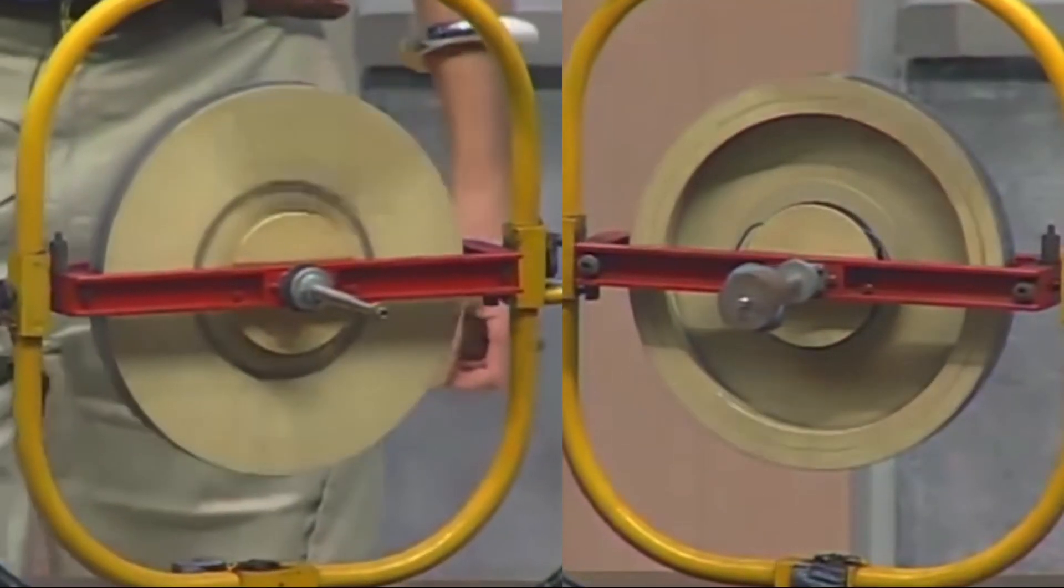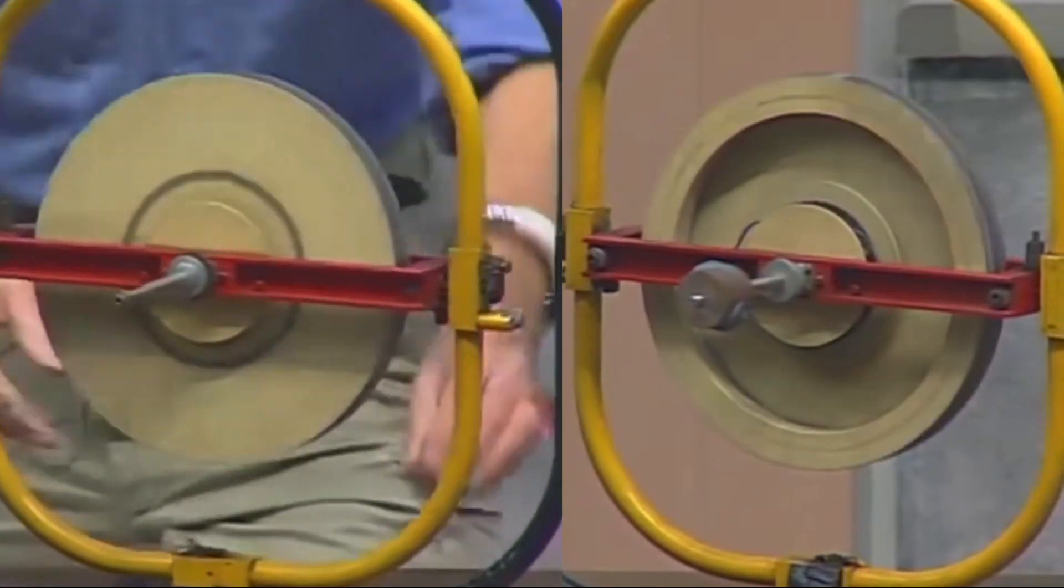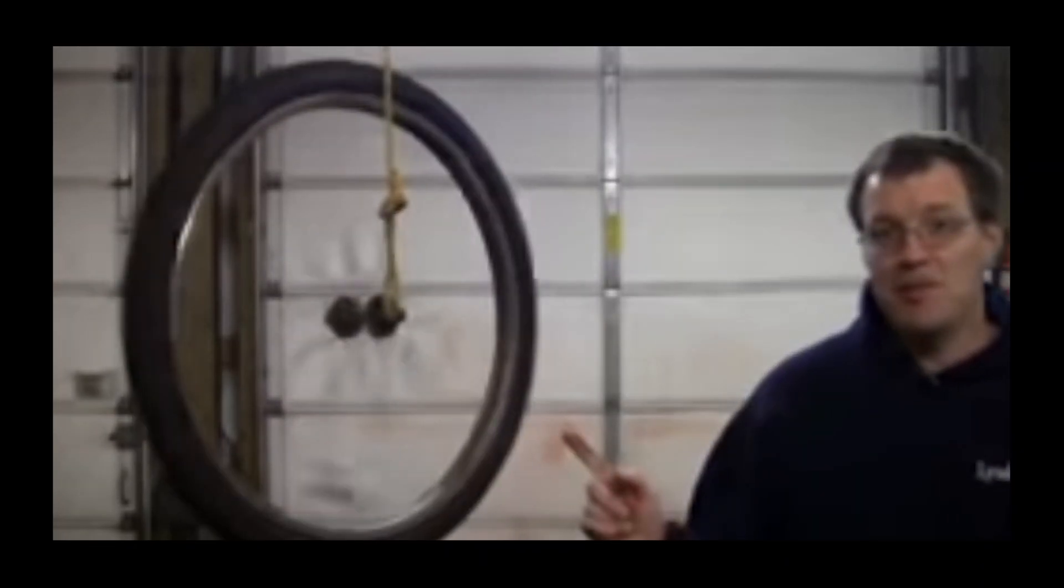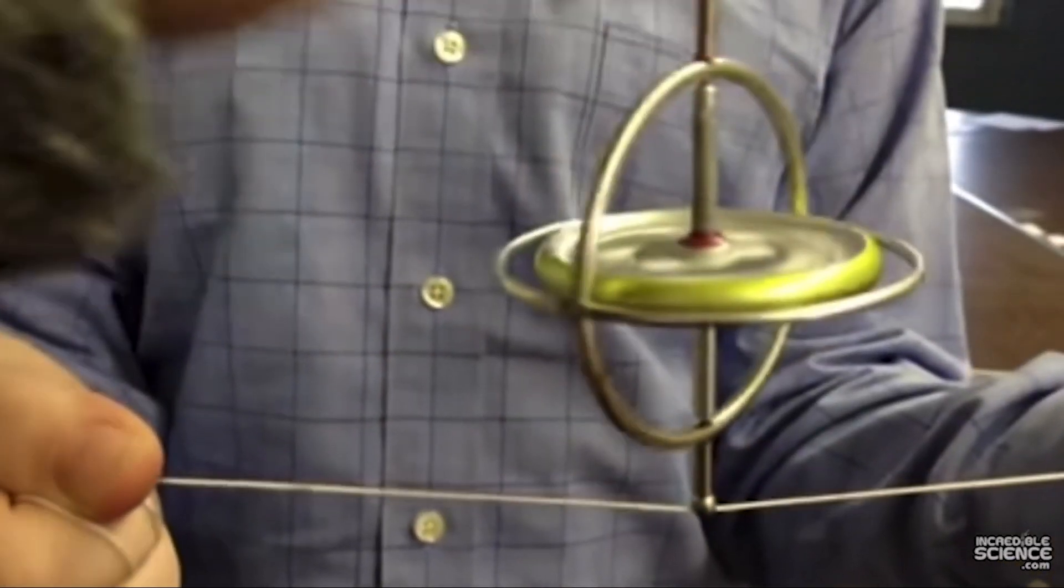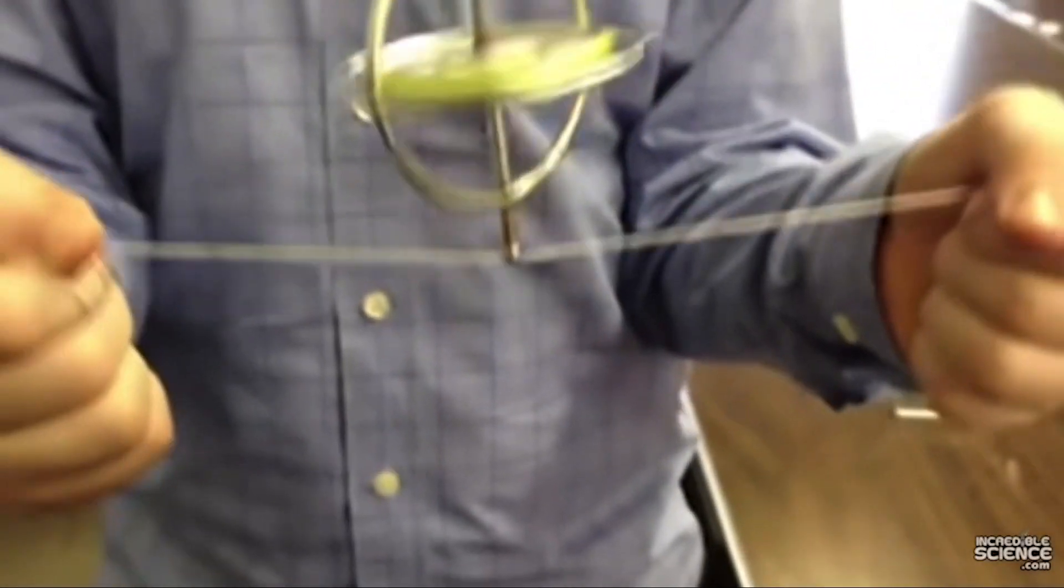And the larger the angular momentum vector is relative to the torque, the slower the system will precess. This phenomenon is also the reason why this experiment is possible, and also the reason why tops don't fall, and so much more.